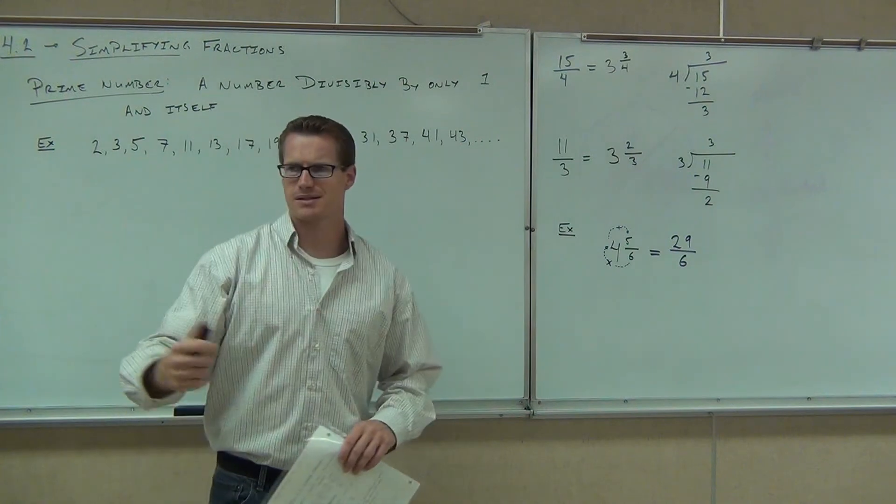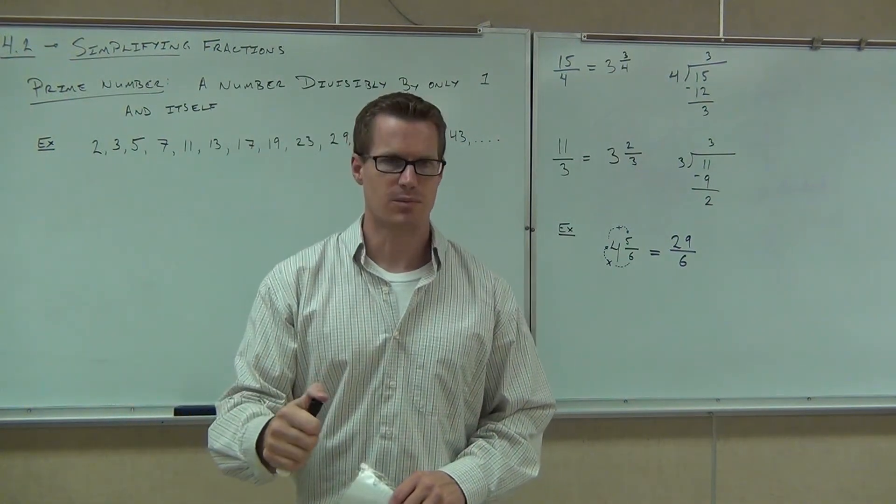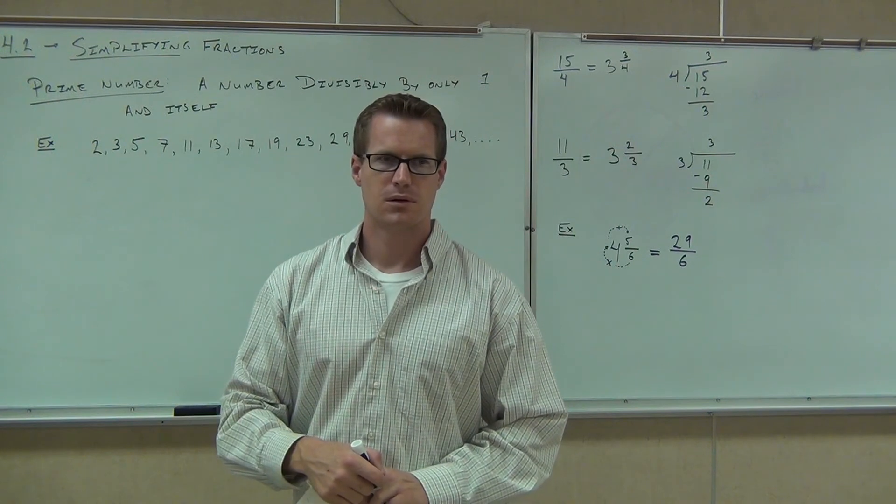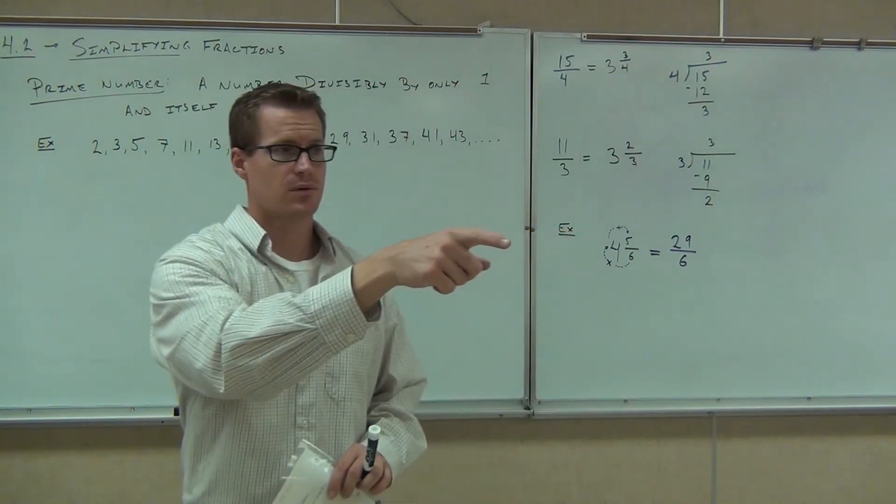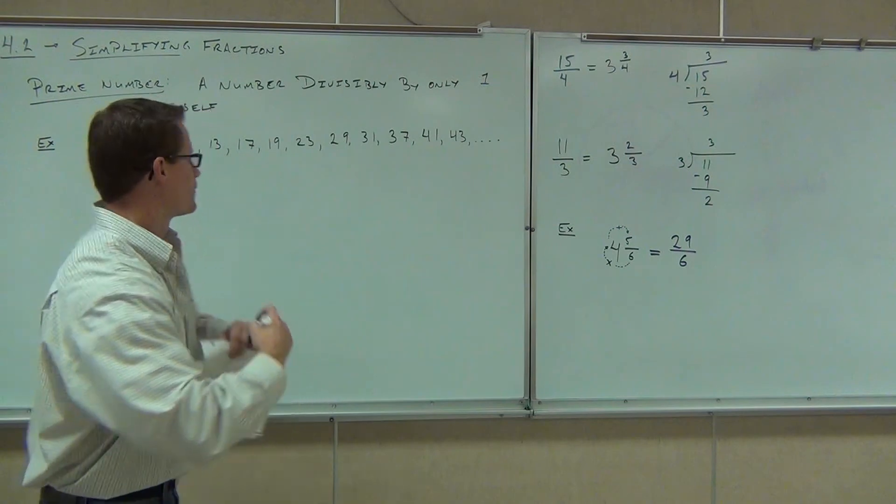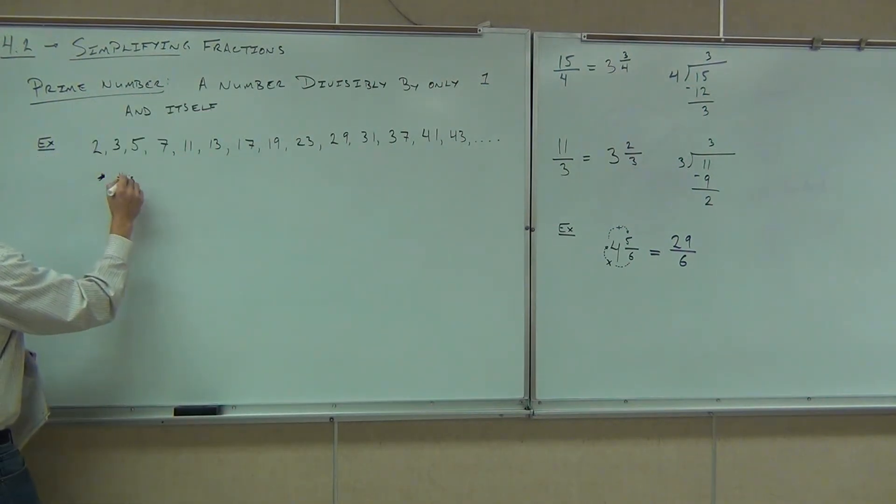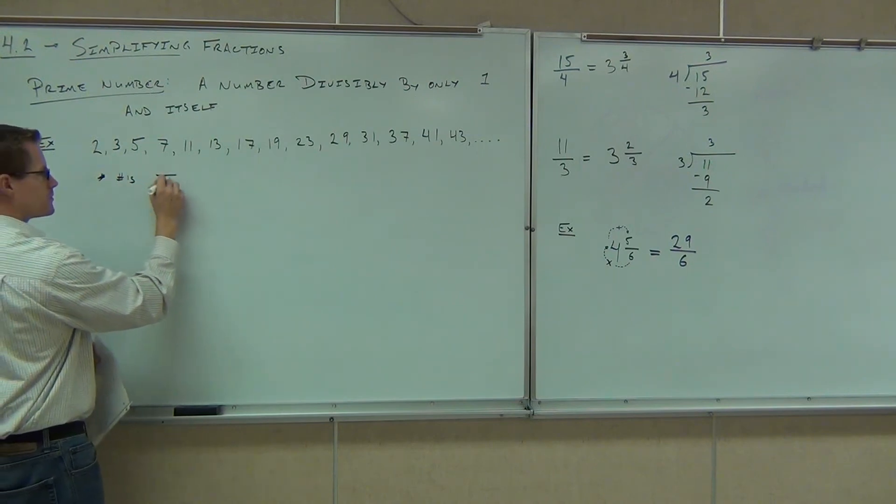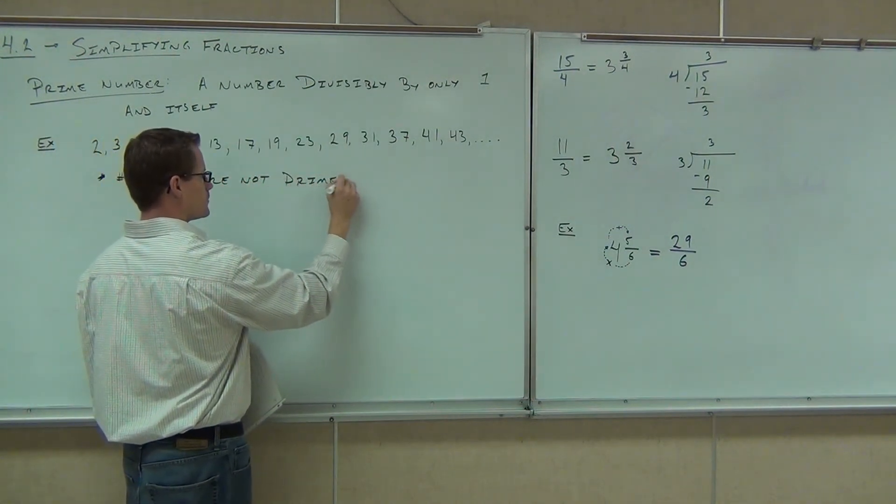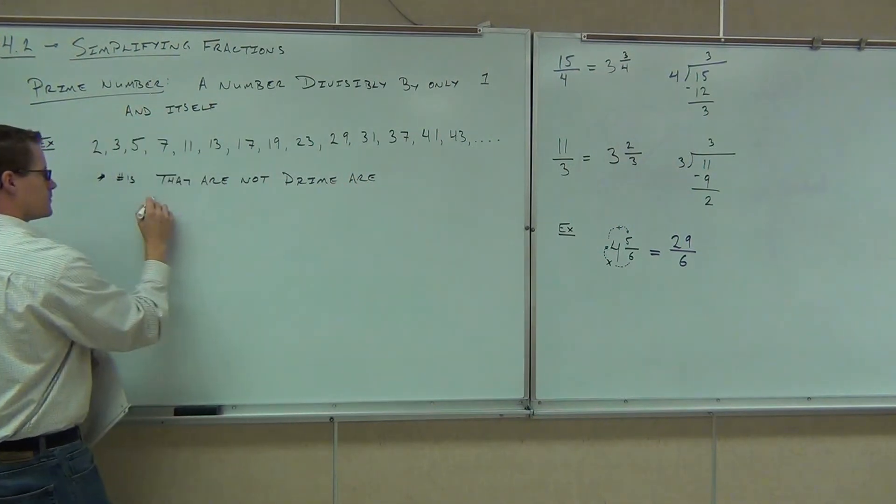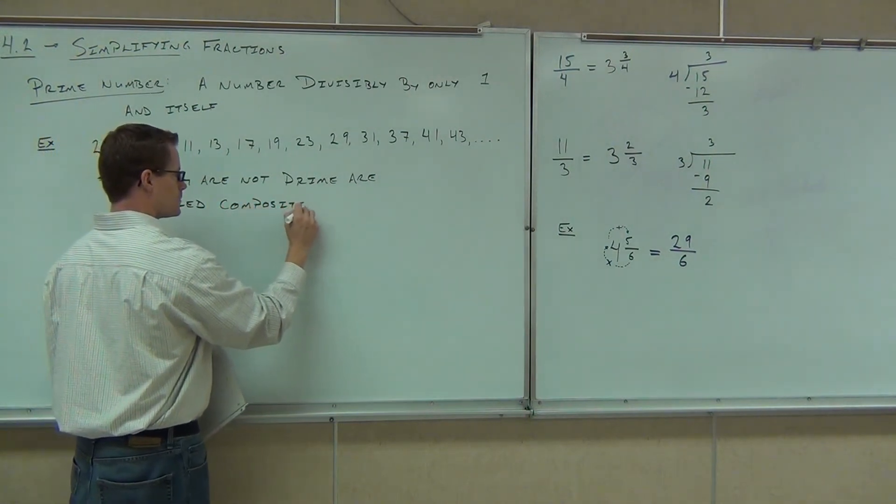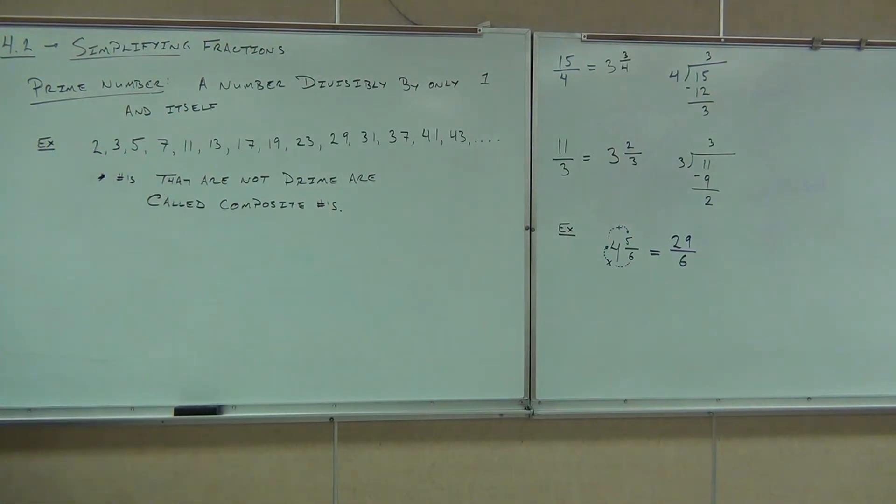By the way, have you ever heard of numbers that are not prime, like 6, 8, 10, 9? What's the name for those numbers that are not prime? You ever heard it? It starts with a C. Common factors? No, common factors, we're going to learn about that later. Composite. Composite numbers. The numbers that are not prime are called composite. It means they're composed of a couple numbers being multiplied together. So numbers that are not prime are called composite numbers.